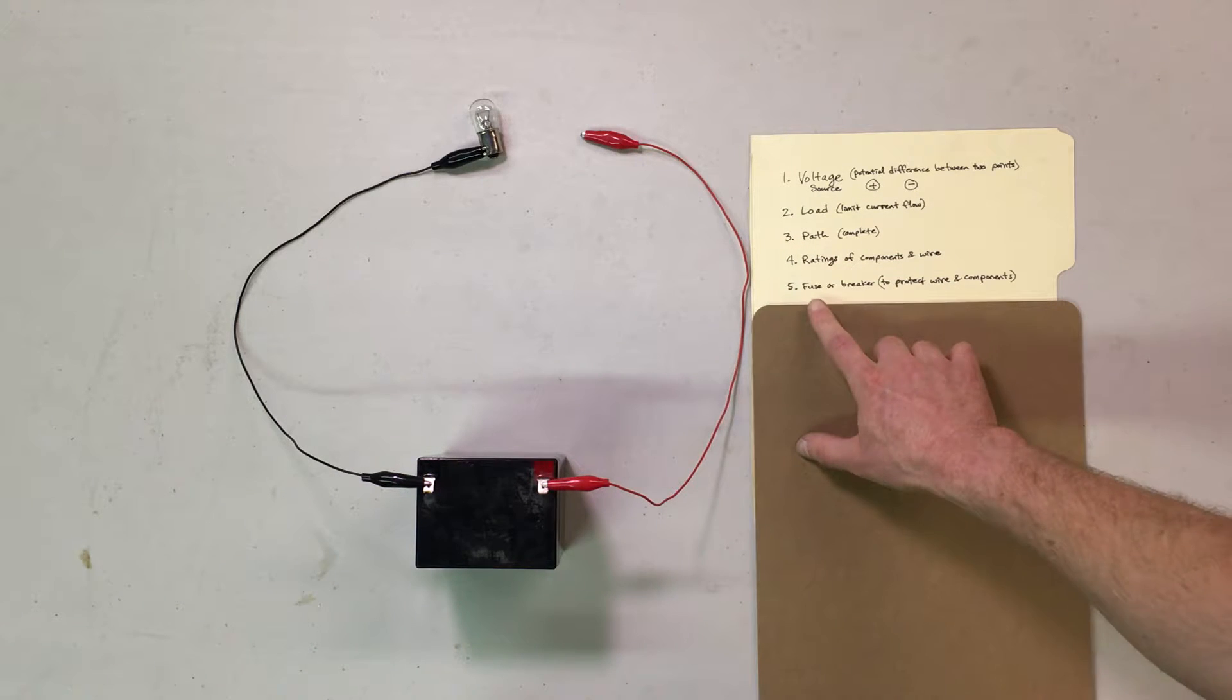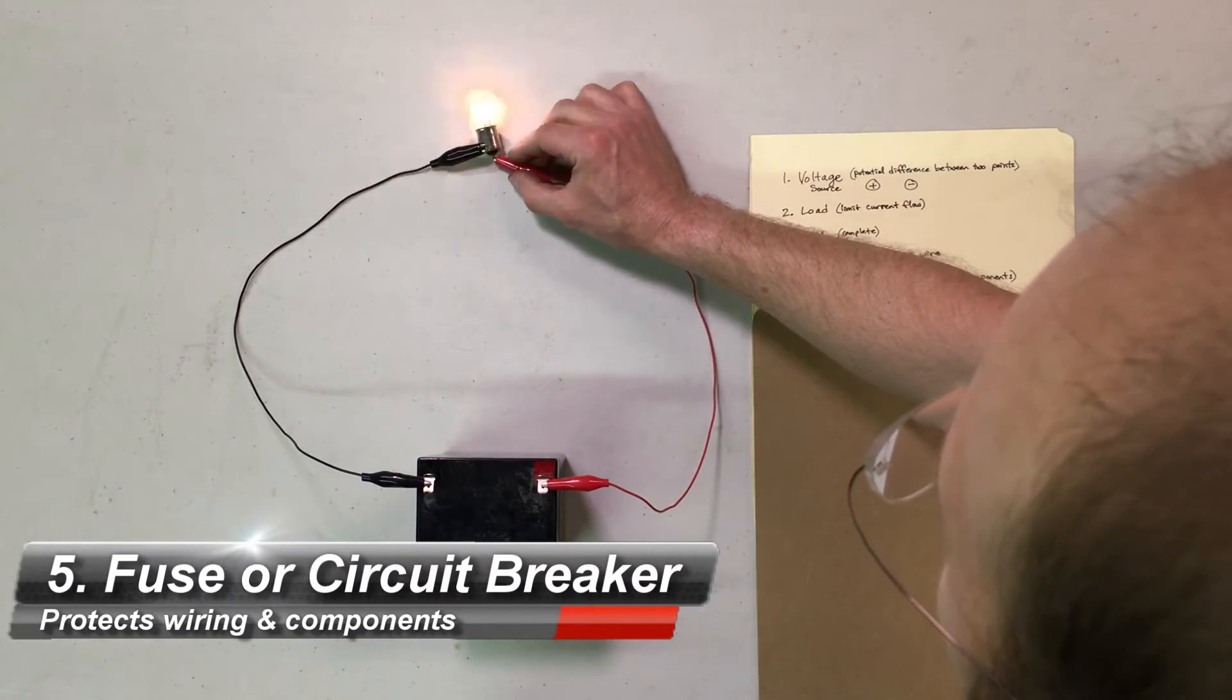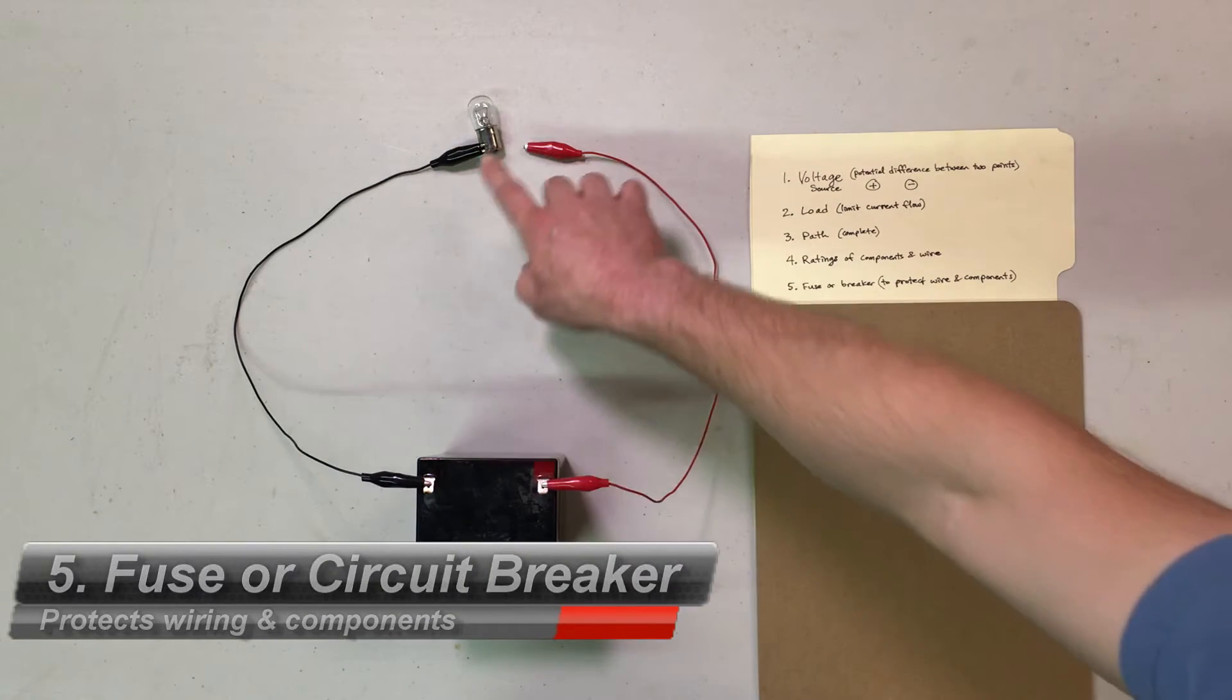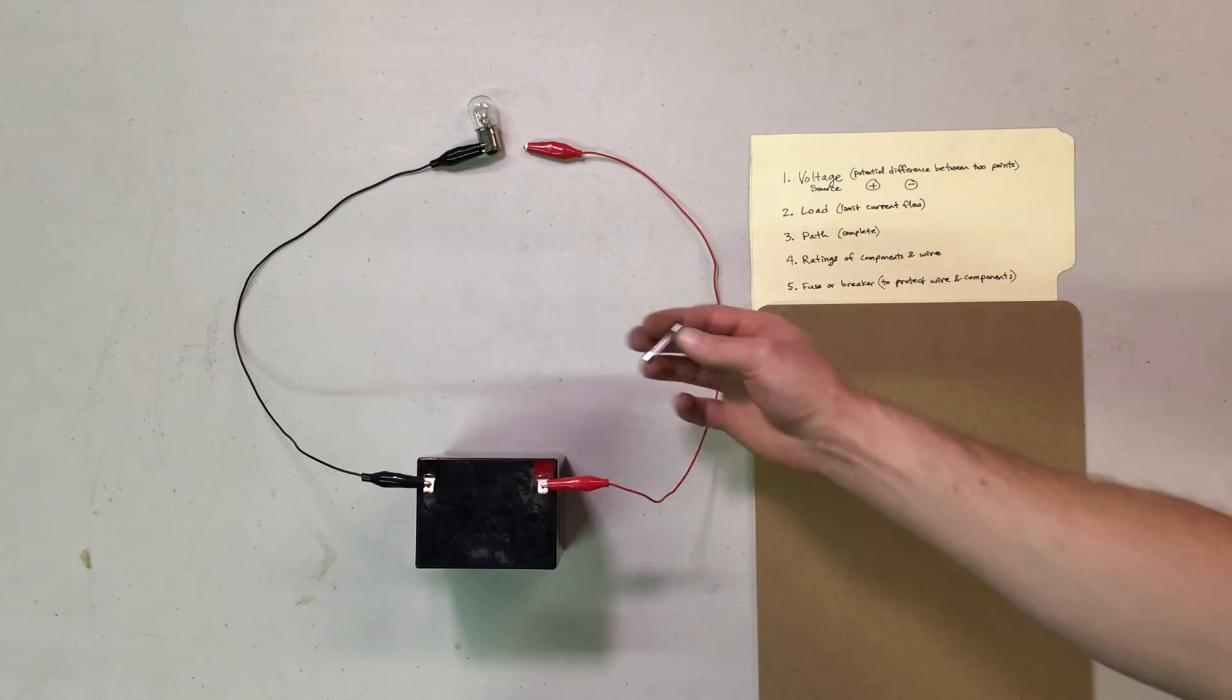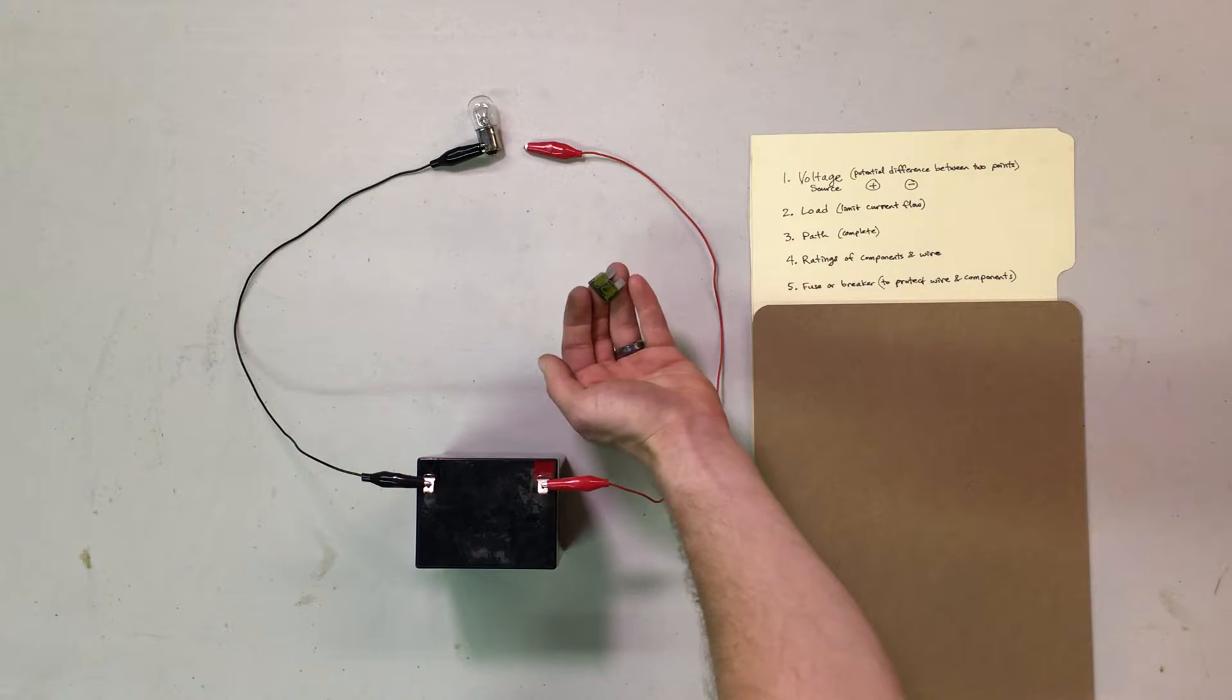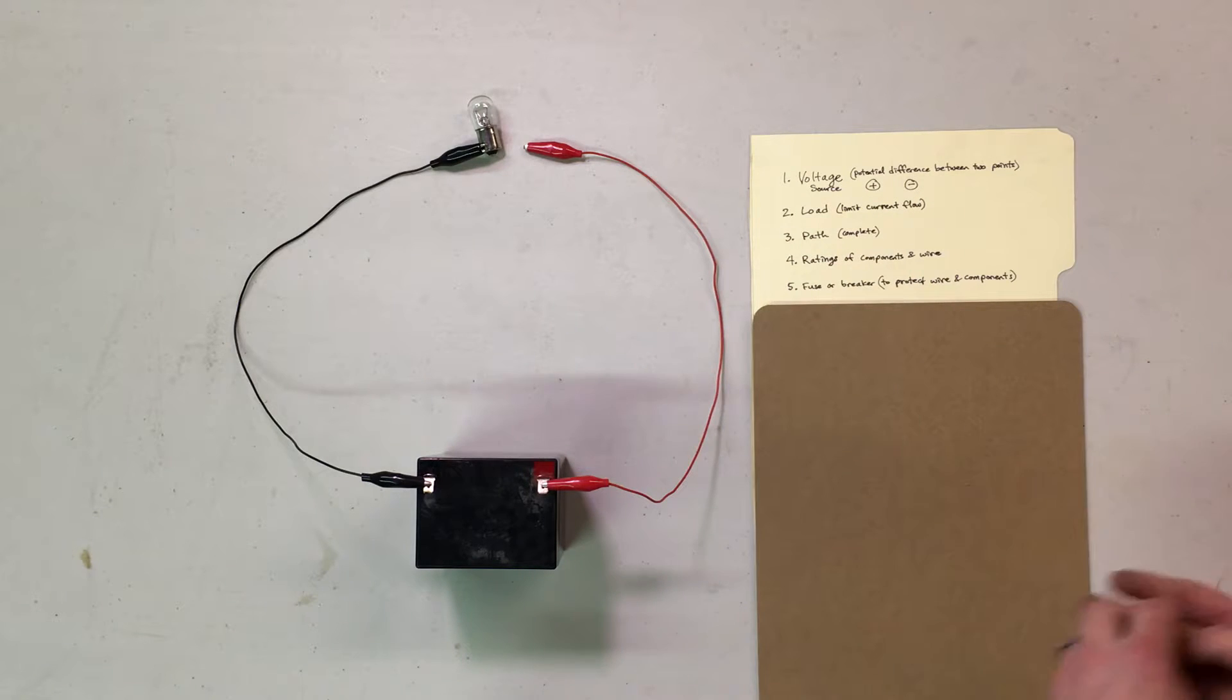So the fifth thing we would need would be a fuse or breaker. Technically this is a complete circuit once this is connected here, but to protect the wire and the components and the batteries, the voltage source from an overload, you would use a fuse like this or like this type of automotive fuse, both are used in multiple situations.